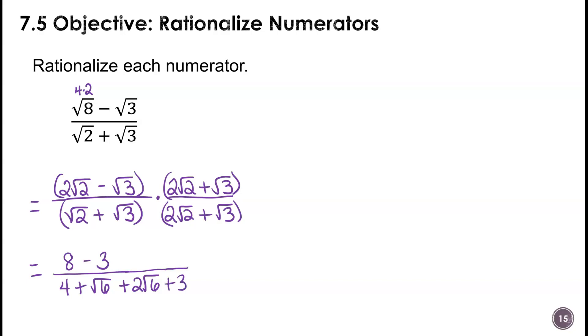All right, so this one will simplify one more step. We have a 5 in the numerator, 7 plus 3 radical 6 in the denominator. All right, and that's it.